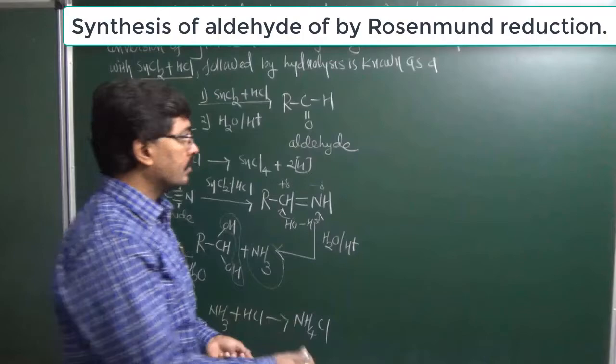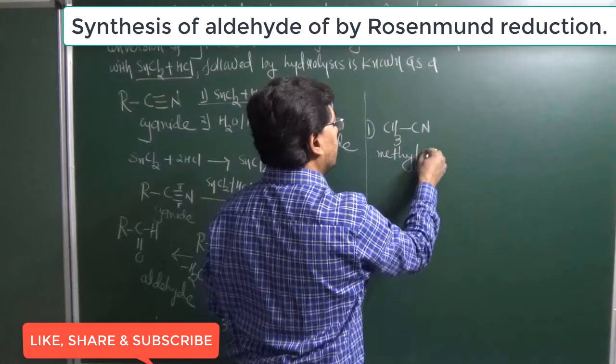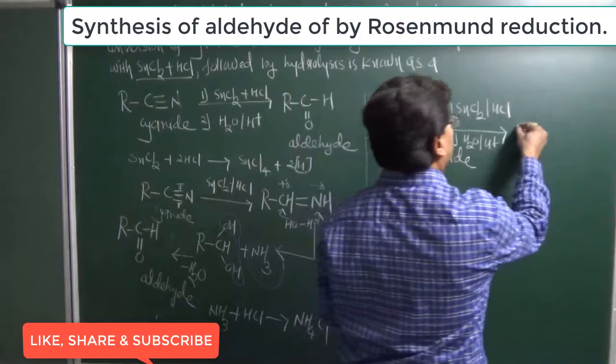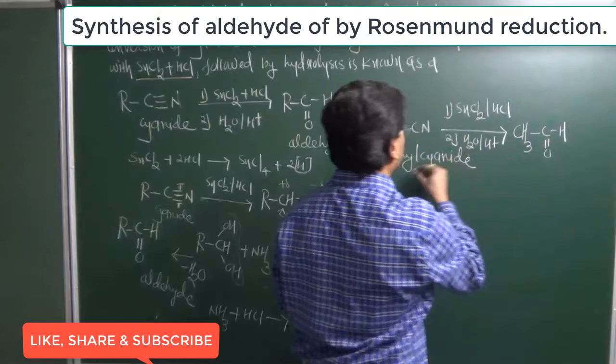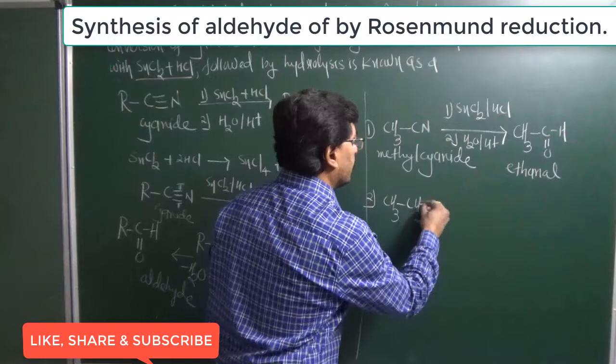Now let's discuss examples. The first compound is methyl cyanide. Using the Stephen Reaction, the cyanide group will be converted into an aldehyde. We get the structure CH3C double bond O-H. So methyl cyanide is converted into ethanal.